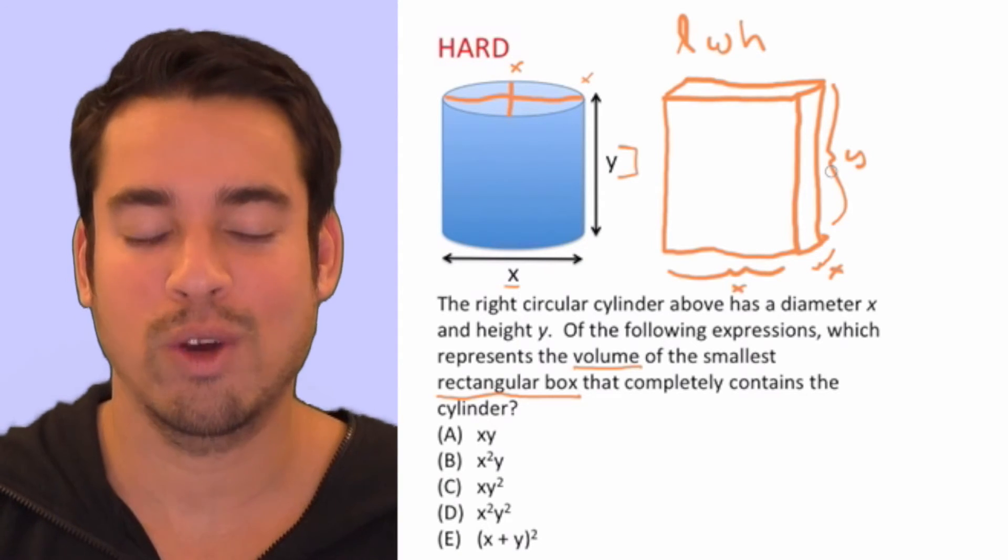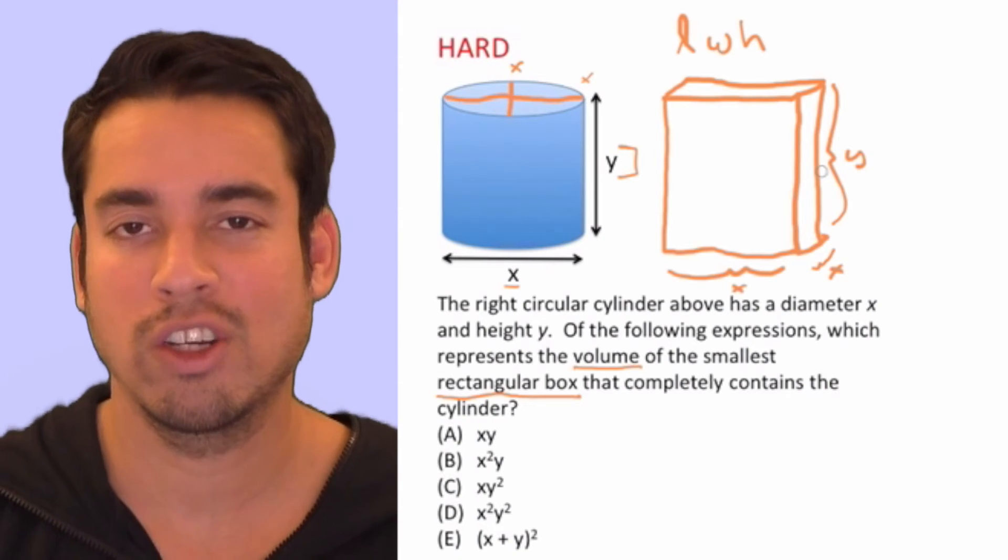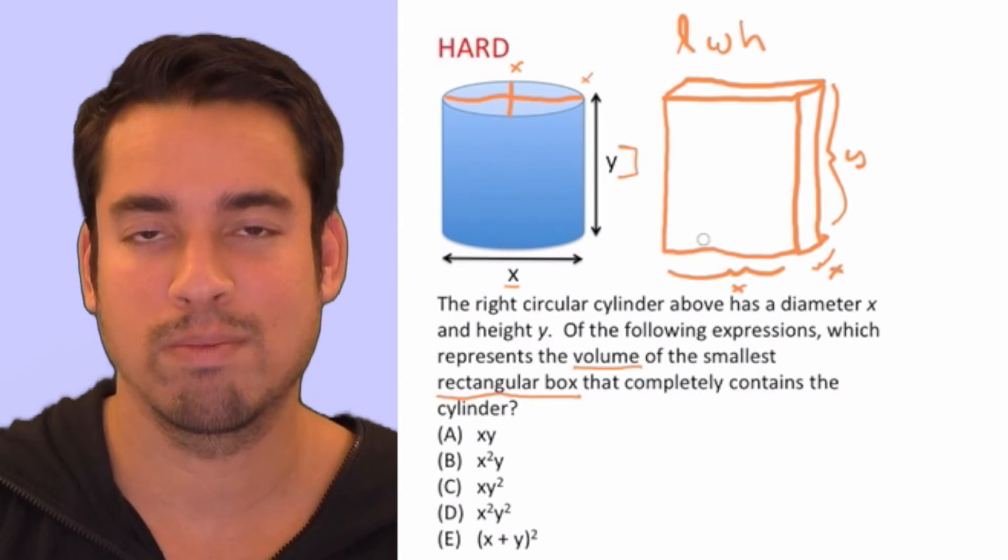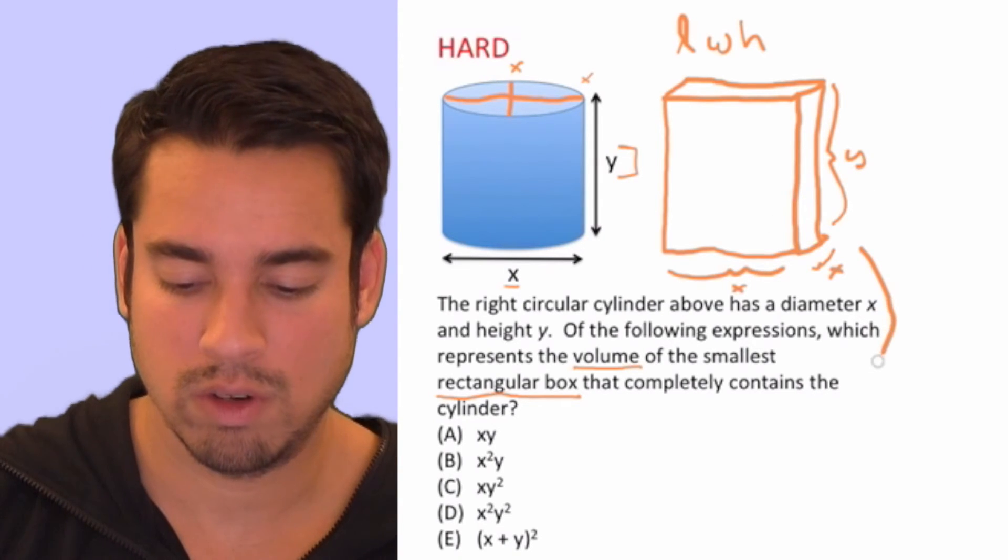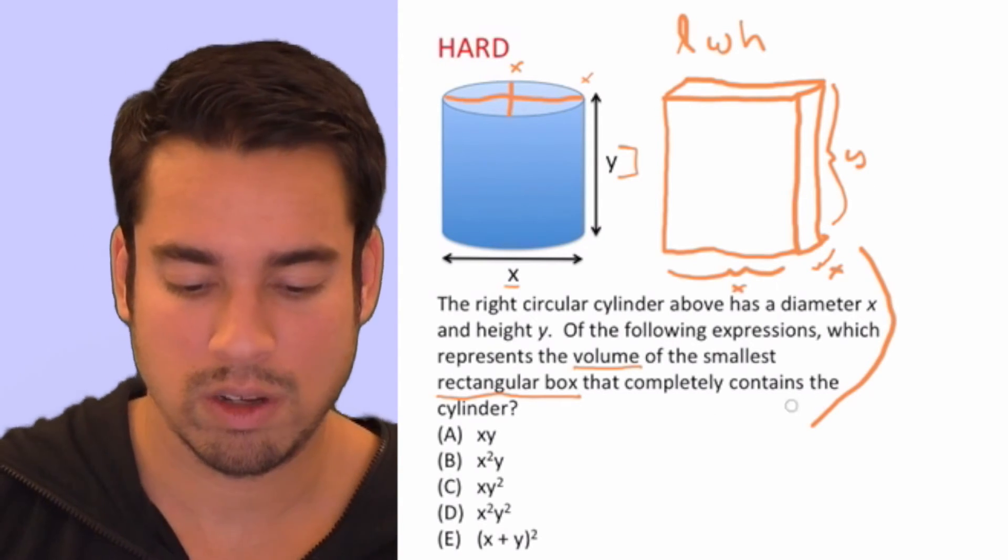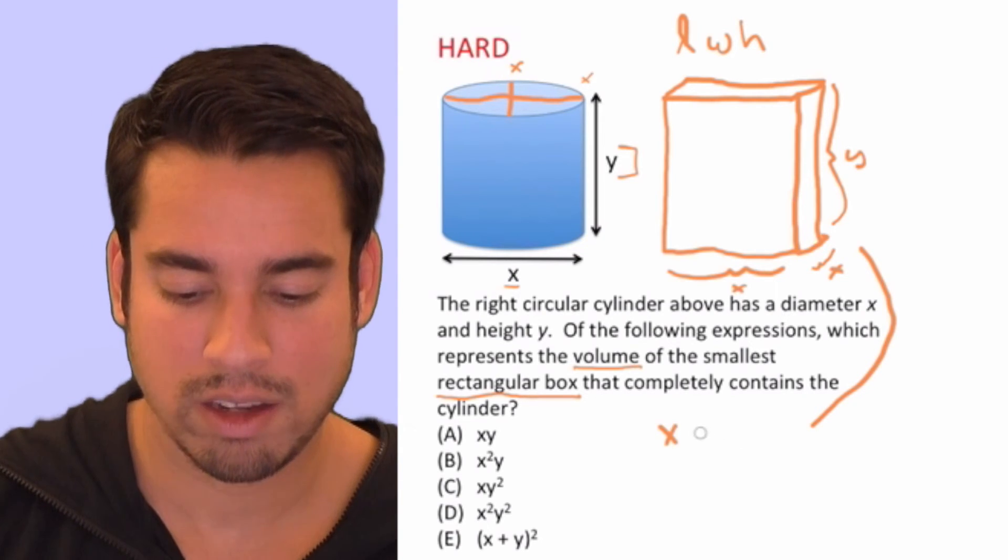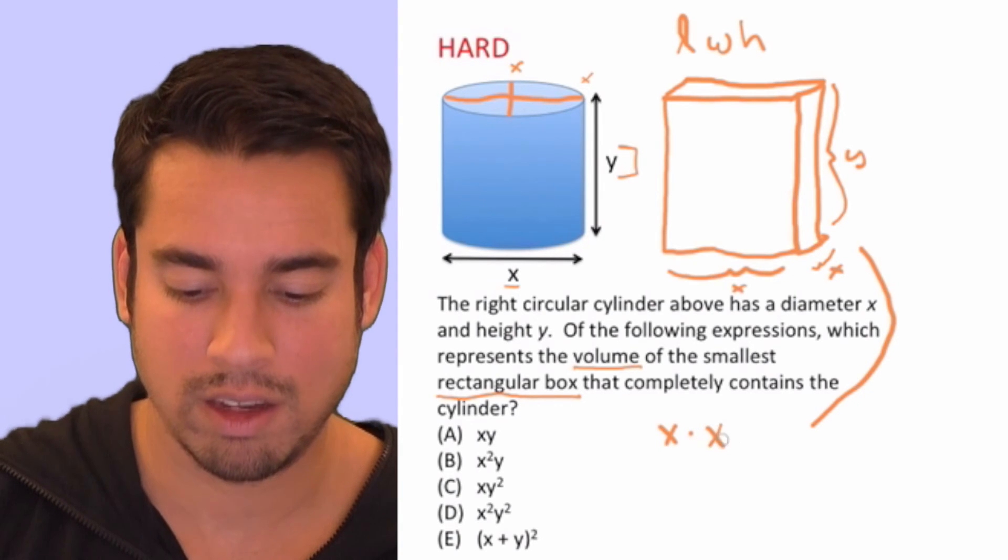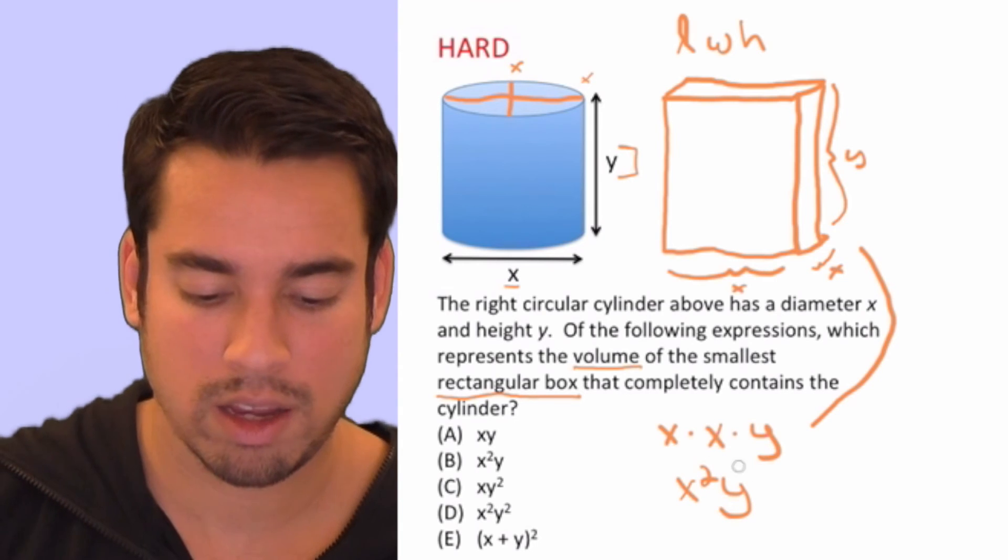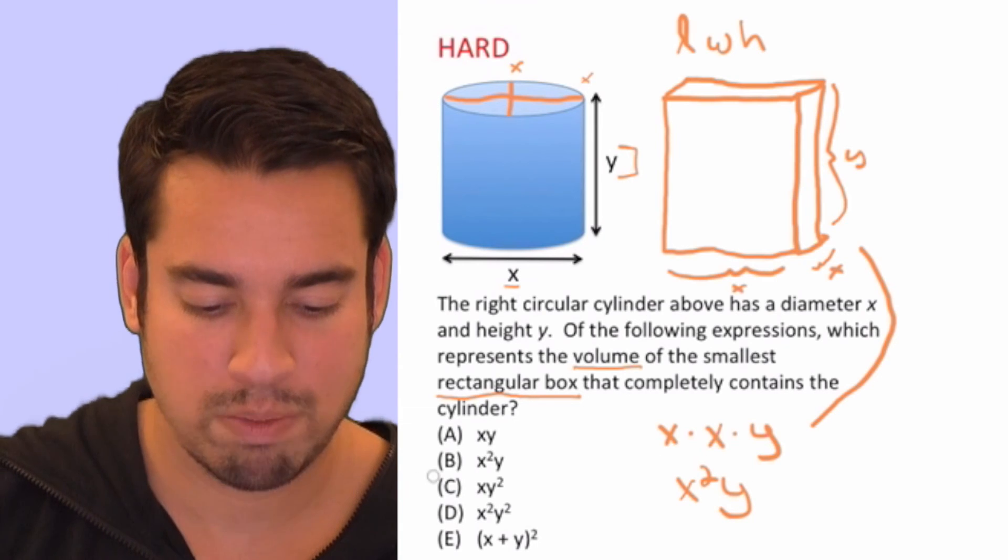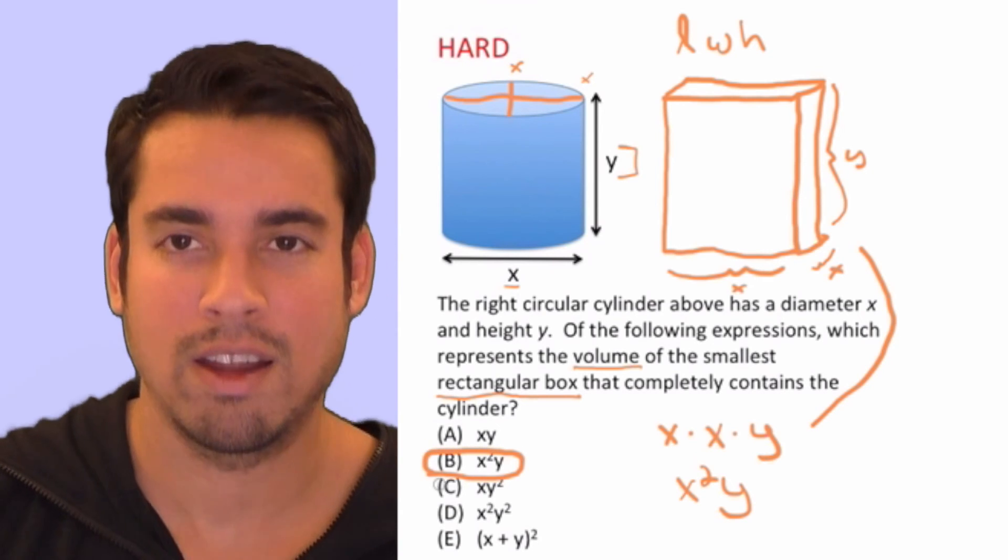It's kind of an interesting question because you might think you're going to have to use the cylinder volume equation and all that, but you really don't. It's much more simple than that. So what is the volume of this rectangular box? It's simply length or x times width or x times height or y, which gives us x squared y. And that is B, right there. Done.